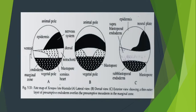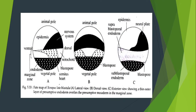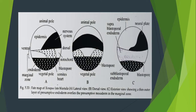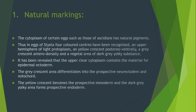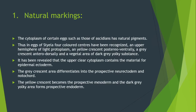Here you can see three views of a Xenopus late blastula: lateral, dorsal, and exterior view. Now, coming to the types of fate map — the first is natural marking.